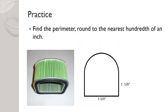Here's one problem for you to try. This is an air filter off of my snowblower — kind of an unusual shaped air filter that makes for a good problem. The bottom half is like a box and the top half is a semicircle. It's three and three-quarter inches wide, and one and five-eighths of an inch from the bottom up to where it starts to curve. Take a minute and figure out the perimeter of that filter. Pause the video, work that out — it's a little bit tricky — and unpause when you're ready to see the solution.